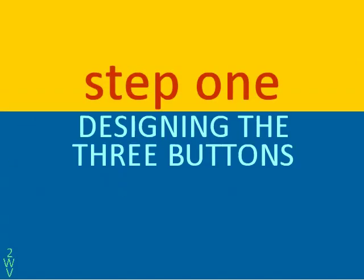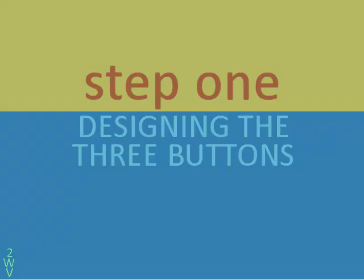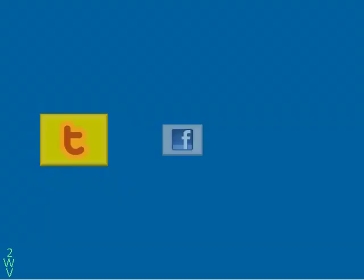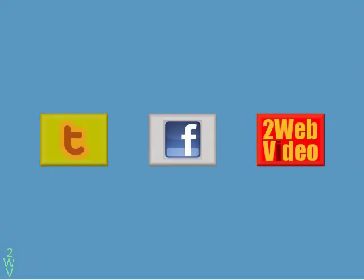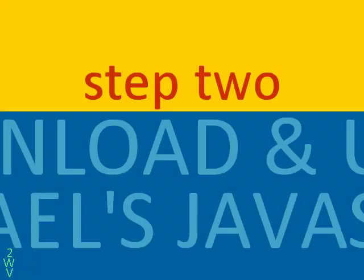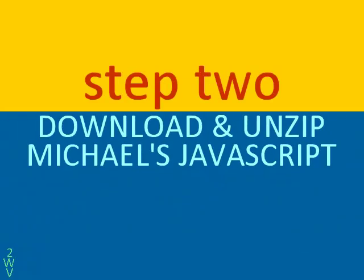To make the accordion, the steps are simple. The first step is to create the three button images, each 120 by 90 pixels. Next, download the JavaScript from Michael's website.